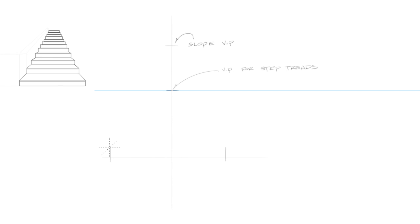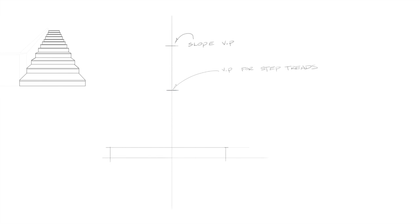Now we'll establish the height or the rise of the first step. For this example, I drew another horizontal line nine inches above the baseline in half-inch scale.